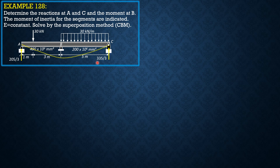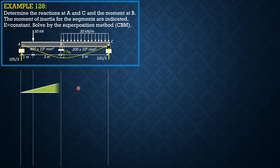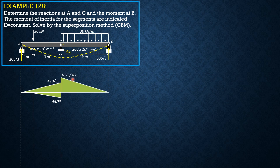From there we construct the moment diagram by parts. Call that deflection at B due to the load. Selecting B as the moment center: the moment due to reaction 205/3 times 4, divided by 2 because the moment of inertia branch is 2I, gives 410/3 EI. The moment of the 30 kN load at B is 30 × 3 = 90, divided by 2 gives 45/EI. The moment due to reaction at C is 335/3 × 5, giving 1675/3 EI.